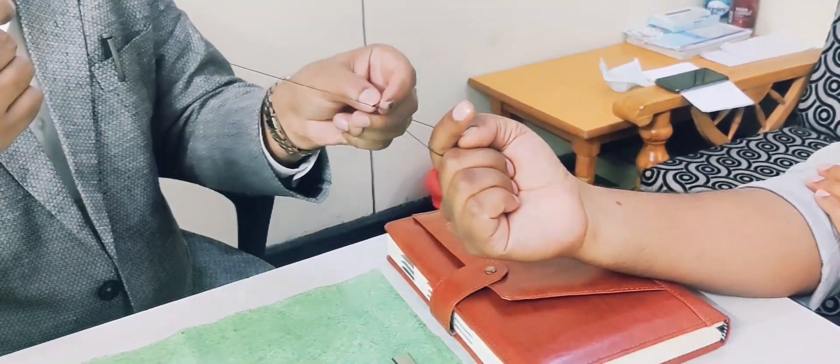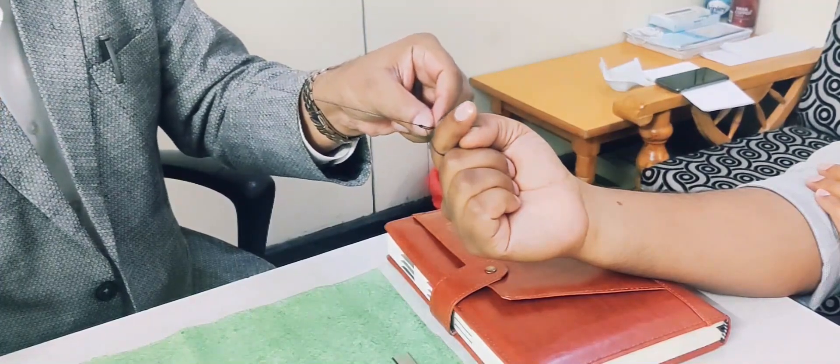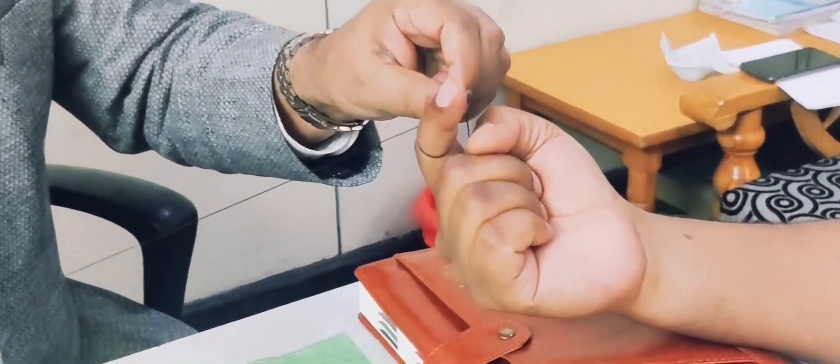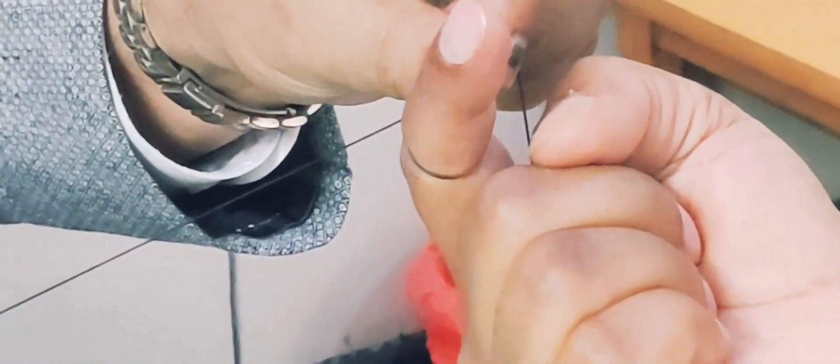And then you can use a knot pusher and then you see how it is moving there. If you want, you can come close to see on the finger that the pressure effect caused by this knot. Can you show the camera near to the finger that the pressure effect is there.